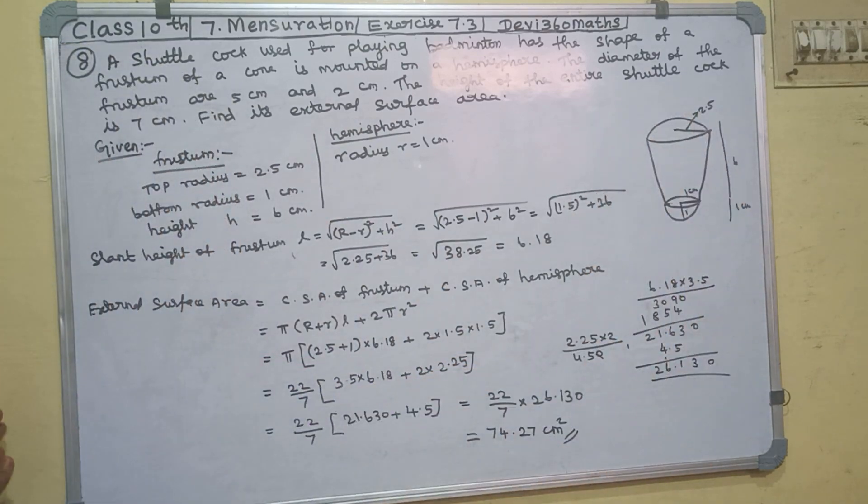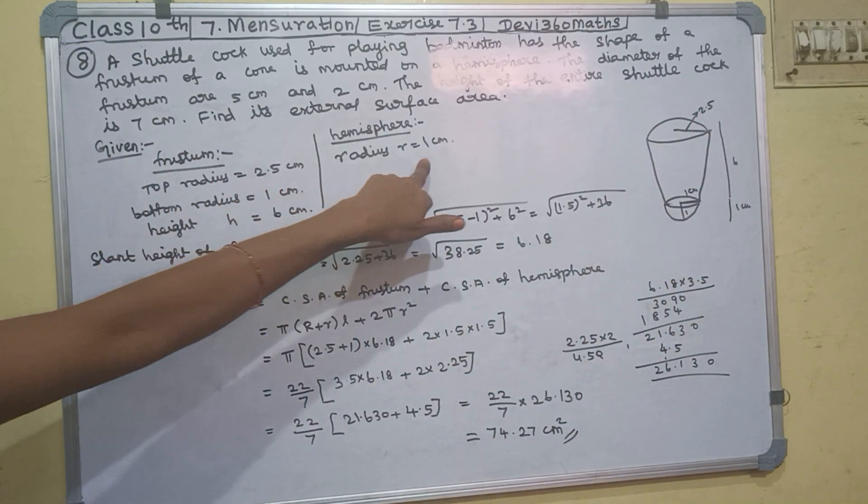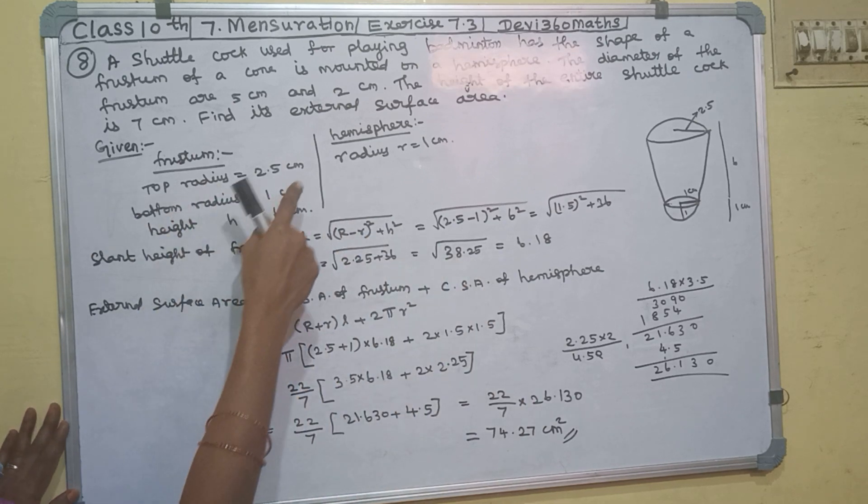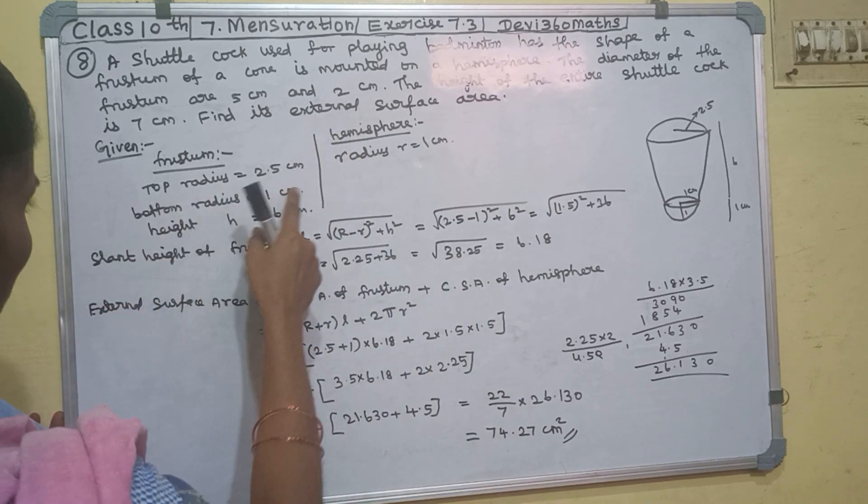The hemisphere radius is a frustum bottom. The hemisphere radius is equal to 1. The diameter of the frustum at the top is 5 cm, so the top radius is 2.5 cm. And the bottom radius is 1 cm.